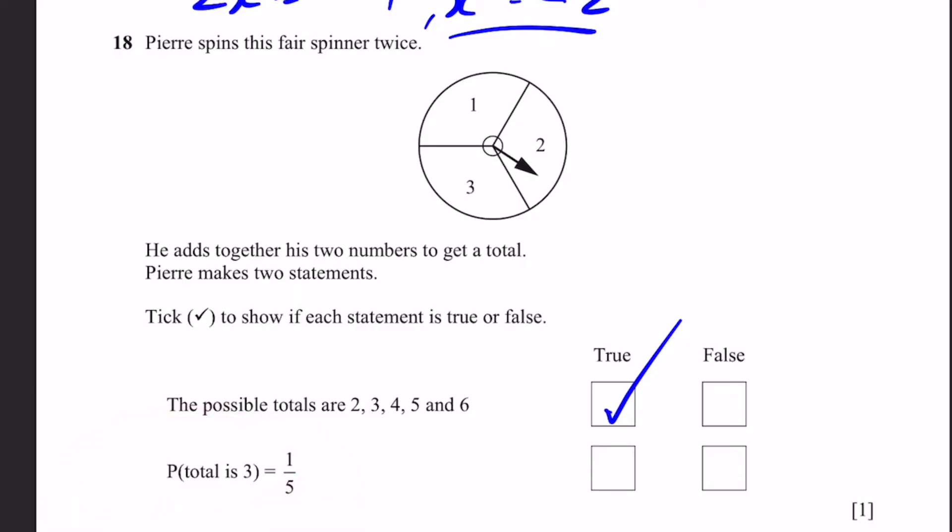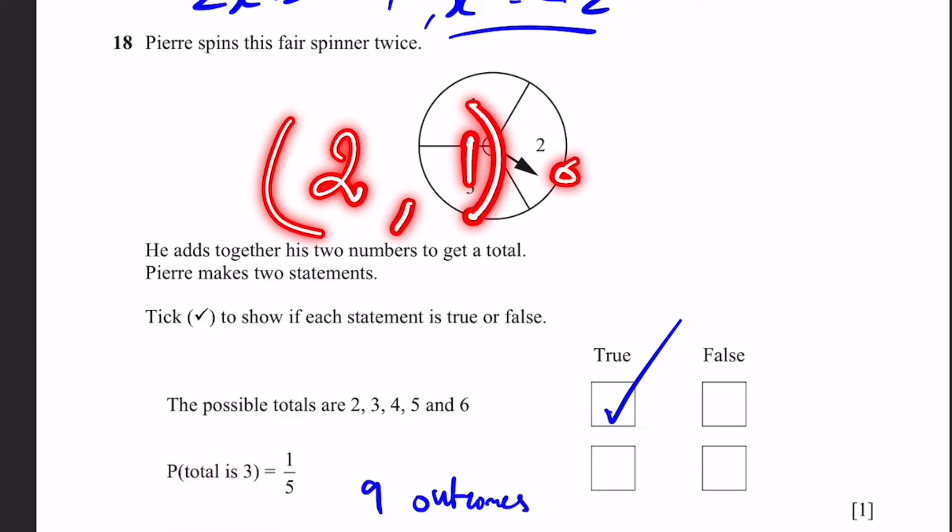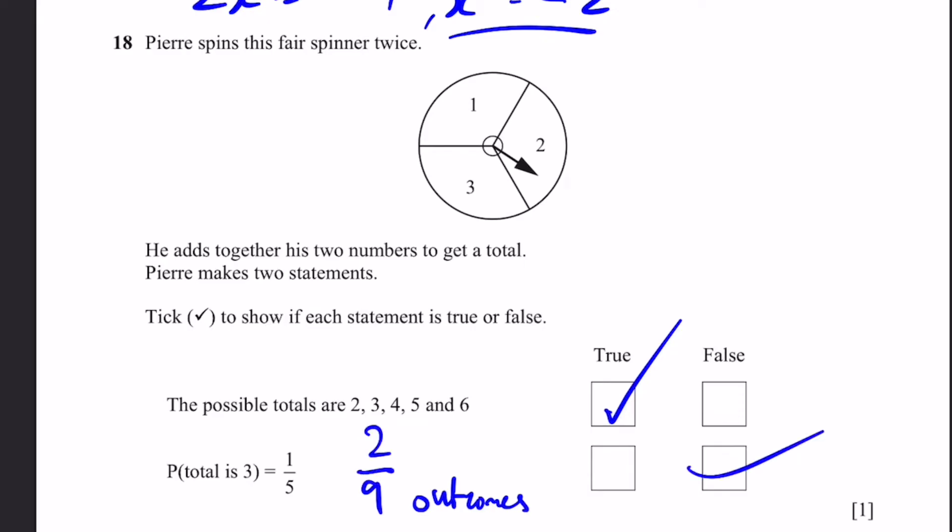Next, the probability that the total is 3 is 1 by 5. Well, the total number of possible outcomes is 9. Because we have 3 different options here, and then we have 3 different options on the second spin. So 3 times 3 is 9. So there's 9 different outcomes. And to get a total of 3, we can spin 2 on the first spin and 1 on the second one. Or, we do the reverse. 1 on the first, 2 on the second. And this is 2. So the total probability that the total is 3 is 2 by 9. So 1 by 5 is not correct. We get it false. That's the answer.